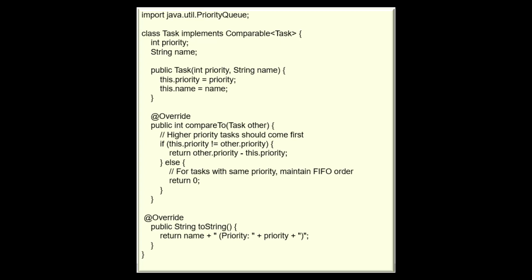The int priority declares an integer field named priority inside the Task class. This field represents the priority of the task. And the String name declares a string field named name inside the Task class. This field represents the name of the task.